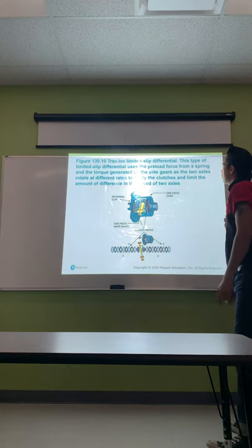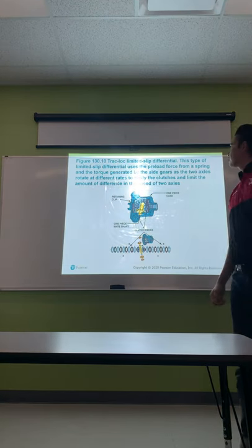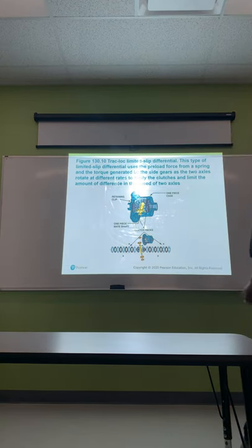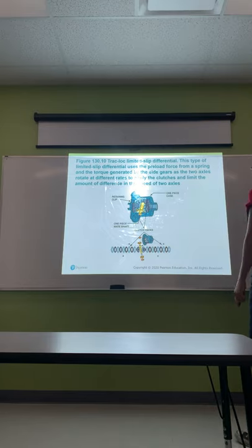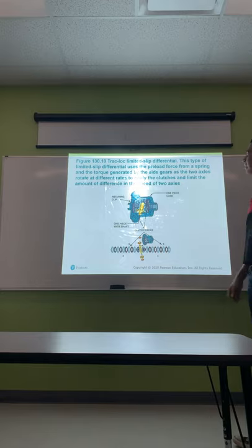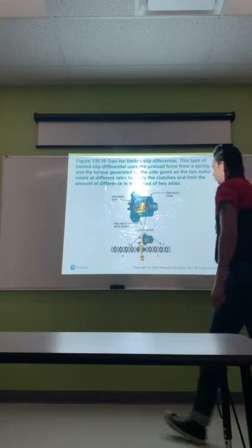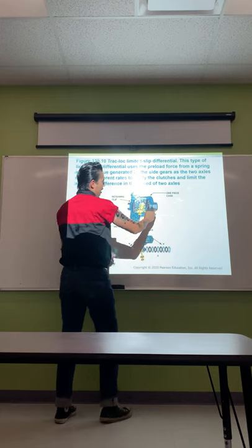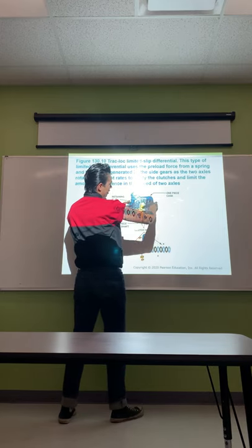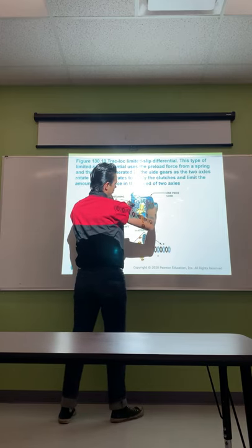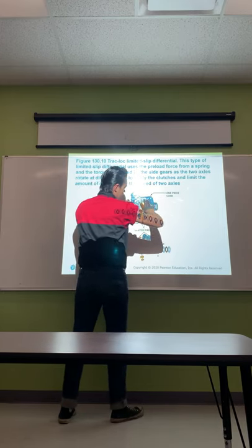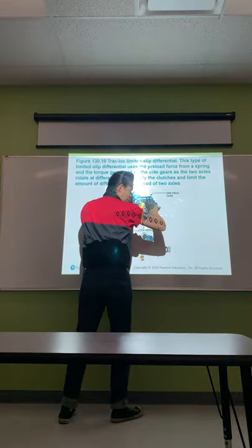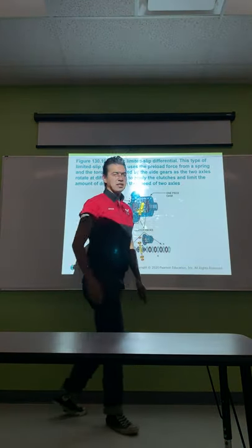The Track Lock limited slip differential uses preload force from a spring and torque generated by the side gears as the two axles rotate at different rates to apply the clutches and limit the speed difference between the two axles. This is the one with the multiple clutch packs. As force is applied to the side gears, it engages more into the carrier, causing everything to grab together and send power down.